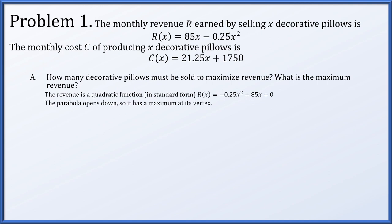This is a downward-opening parabola because the leading coefficient is negative, so it has a maximum value at its vertex. The x-coordinate of the vertex is given by −b over 2a, where b = 85 and a = −1/4. So we have −85 over 2 times −1/4. The quarters cancel, giving 85 divided by 1/2, which equals 85 times 2 = 170.